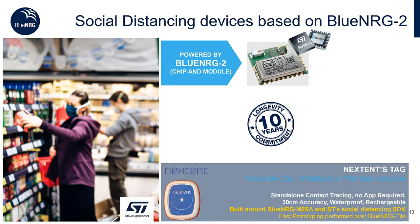Among the products already available in the market, we have the Nexen tag, which comes in a waterproof wristband and pendant version. It is based on our Blue Energy M2SA module, uses our social distancing SDK, and is capable of achieving 30 centimeters of accuracy.